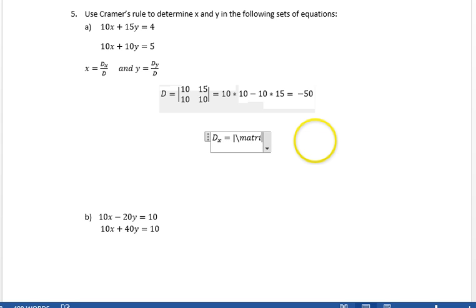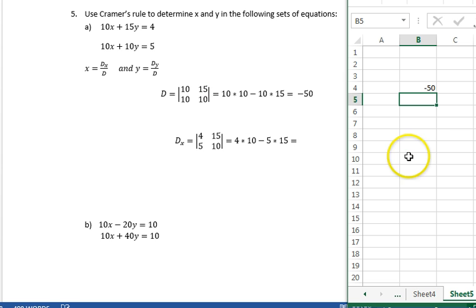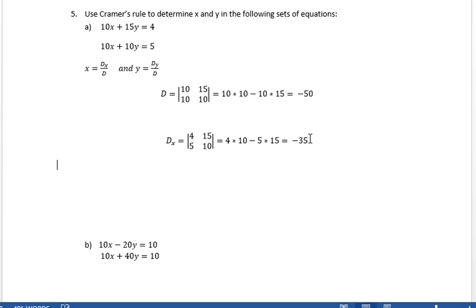D sub x is, so in this case we're putting in, in place of the x coefficients here, we're putting in 4 and 5. So 4 and 15 and 5 and 10. So this determinant is 4 times 10 minus 5 times 15 equals minus 35.